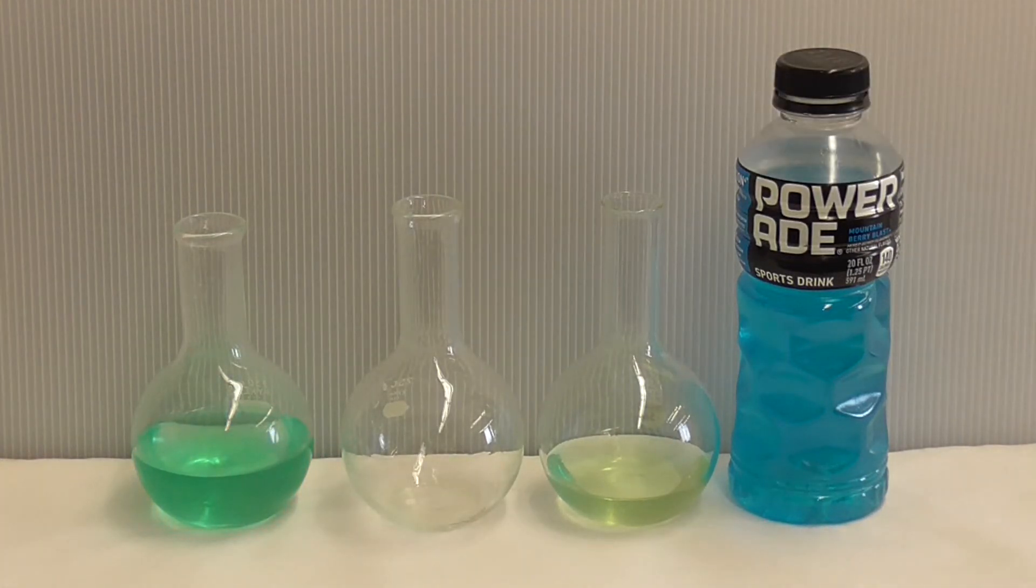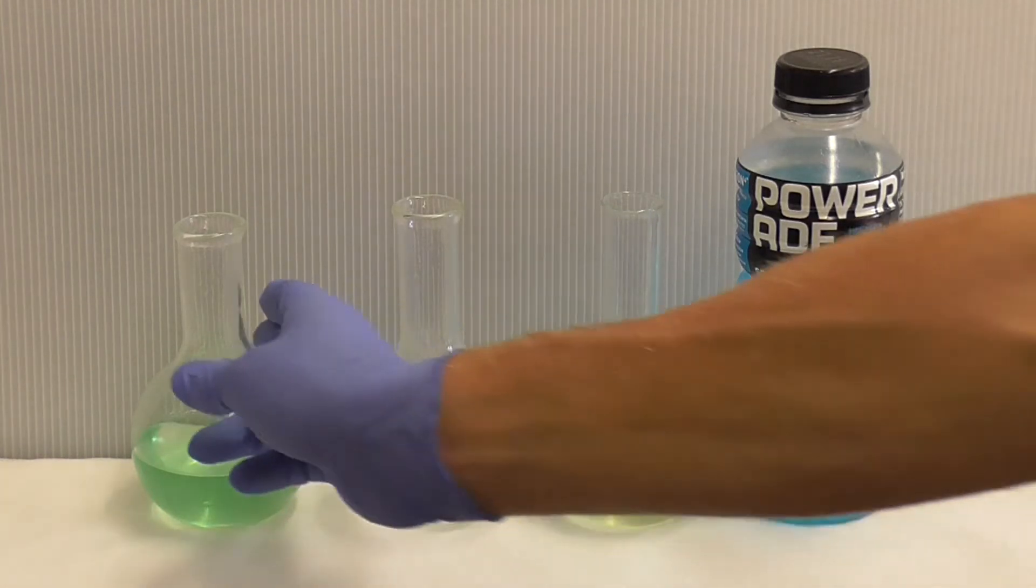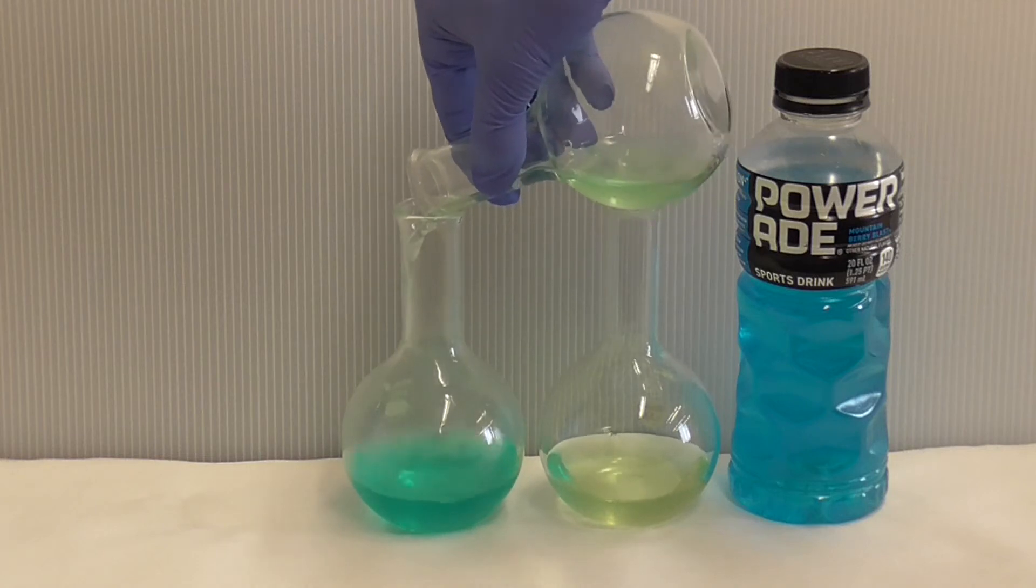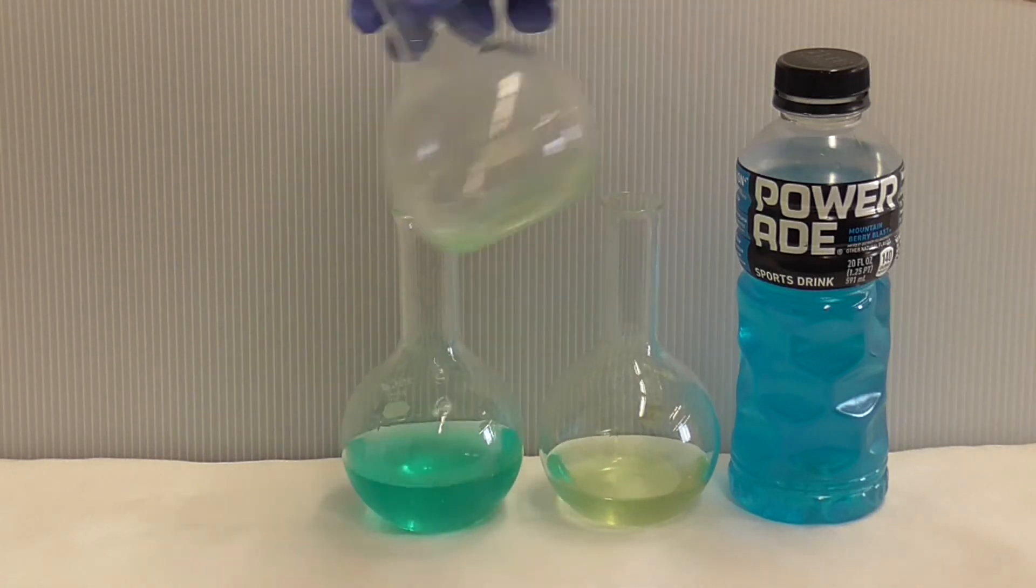That fades to green. This looks yellow. I'll go ahead and pour this back in the middle flask. Ha-ha! There's the blue color again! That's beautiful! It's like a greenish-blue now.